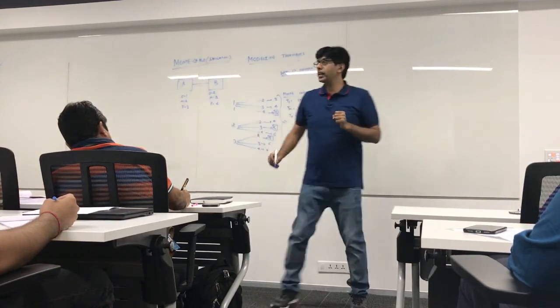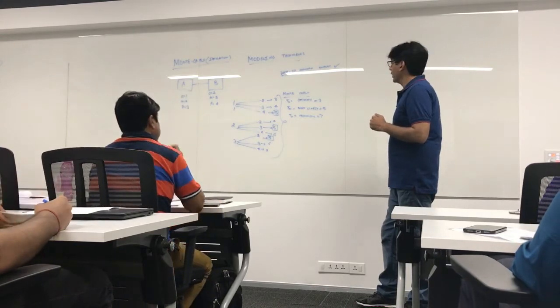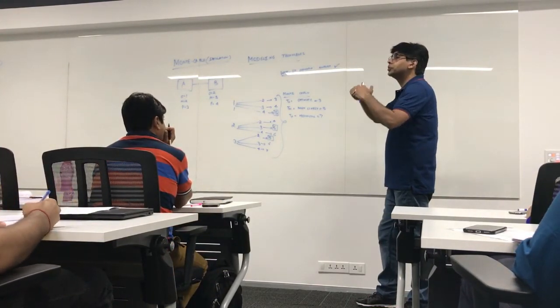Now can I apply 3 point estimates here to find out the expected time? Yes. Can I apply 3 point estimates? Yes. I can find out the expected time assuming that the distribution is beta.